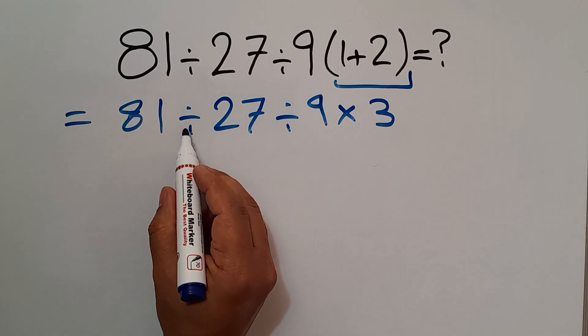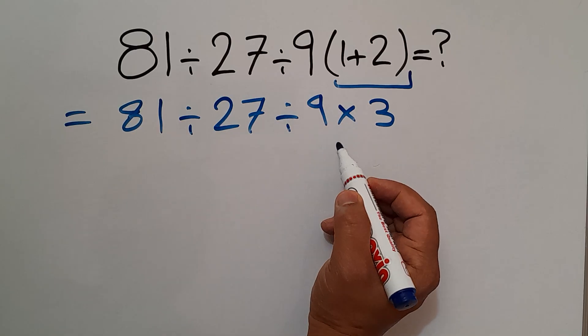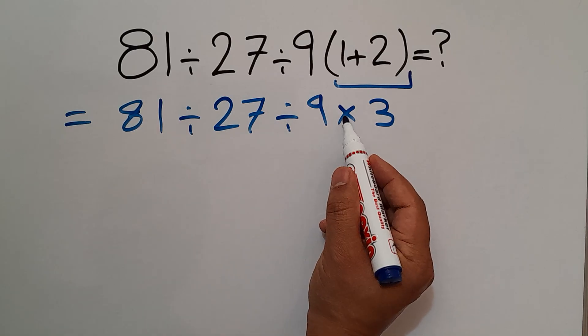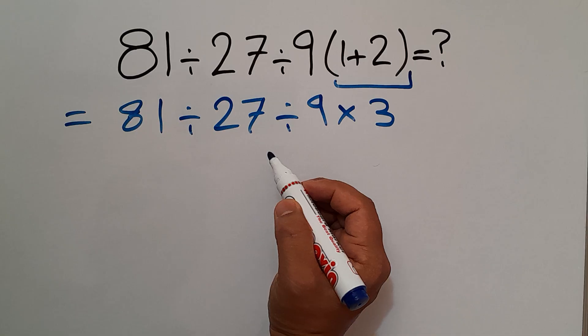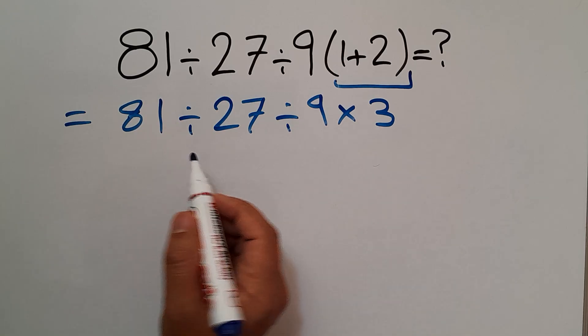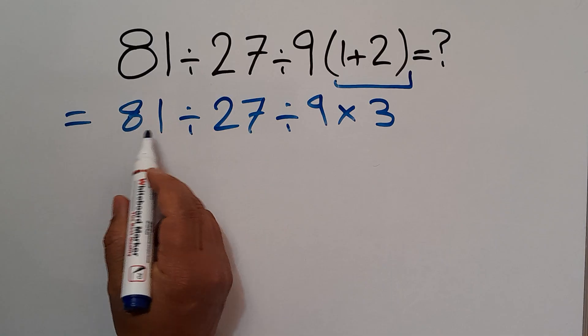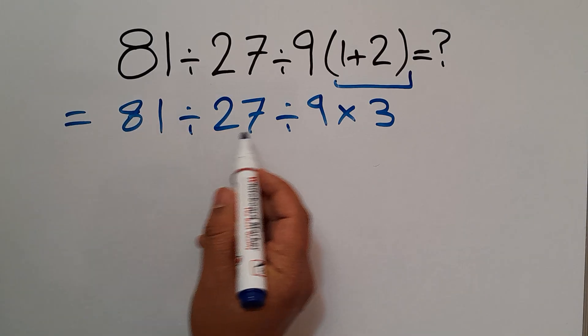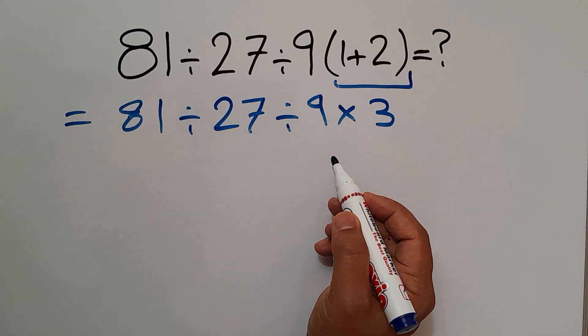Now we have two divisions and one multiplication. As we know multiplication and division have equal priority and we have to work from left to right. So first we do this division, then this division and finally this multiplication.